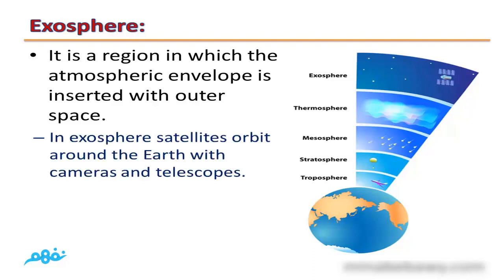In exosphere, satellites orbit around the earth with cameras and telescopes. So the layer that contains satellites is called exosphere.